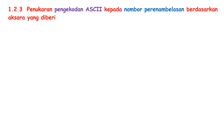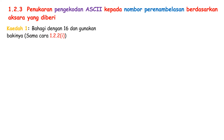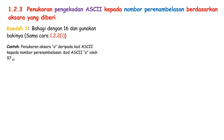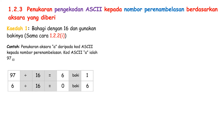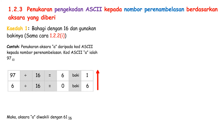There are two kaedah to convert pengekodan ASCII to Nombor Perenamblasan based on the given Aksara. First kaedah: bahagi dengan 16 dan gunakan bakinya. This method is the same as in 1.2.2.1. Example: convert the Aksara 'a' from code ASCII to Nombor Perenamblasan. The code ASCII for 'a' is Nombor Perpuluhan 97. 97 divided by 16 equals to 6 with the remainder 1. Use the value 6 and divide it by 16 again, will get 0 with the remainder 6. Since we get 0 already, we can get the Nombor Perenamblasan by reading the Nombor from bottom to top. Therefore, the Aksara 'a' is Nombor Perenamblasan 61.